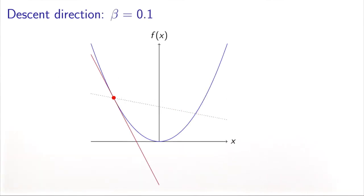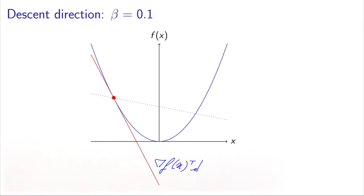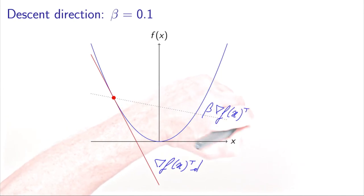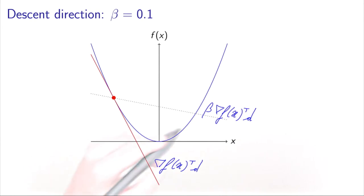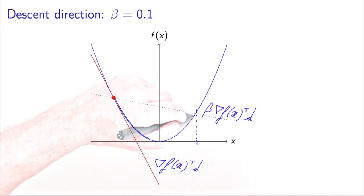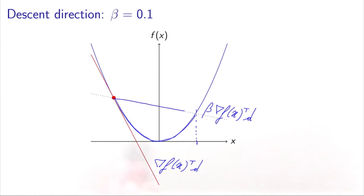Let's look at what this means on a graph. We consider the same function and look at the tangent, whose slope is the directional derivative. We have also plotted the line with slope beta times the directional derivative, where beta equals 0.1. The theorem says that the new value of the function is below that line if the step is small enough. In this example, all steps up to a certain point generate a value of the function which is below the line defined by beta times the directional derivative.